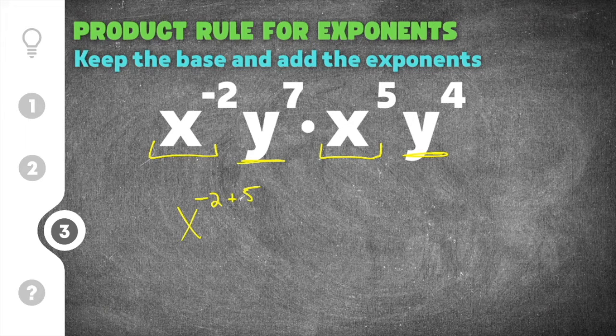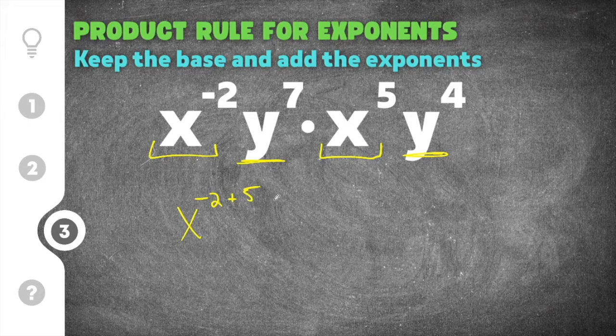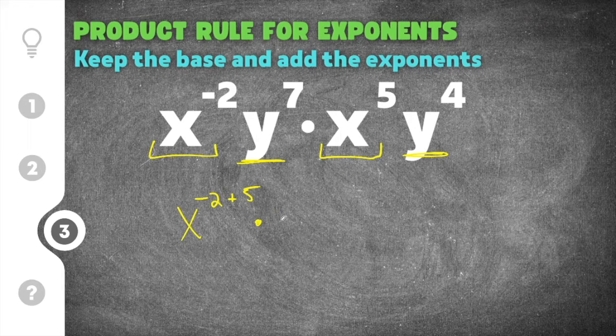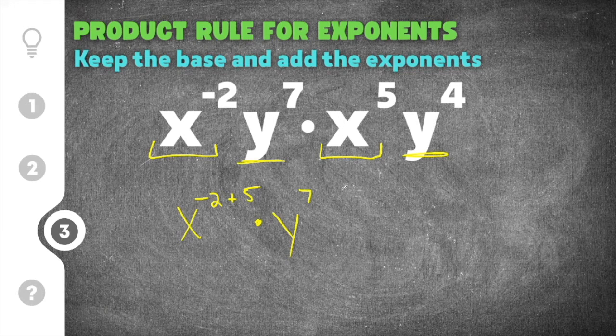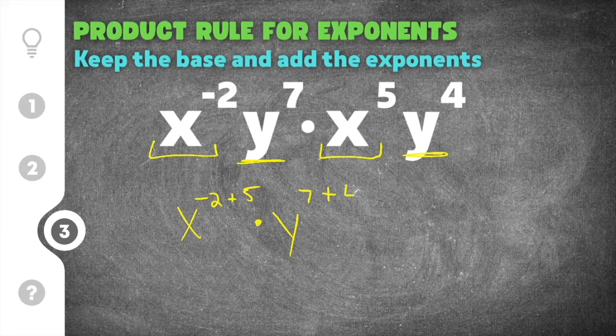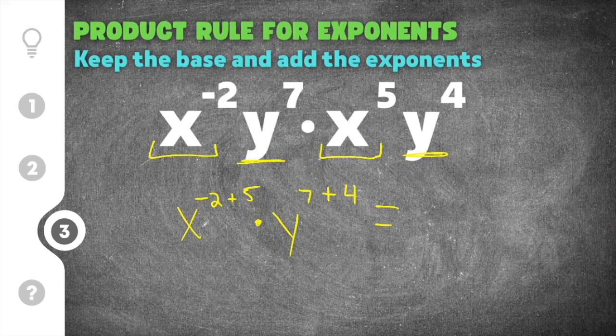So we're going to add those together because we are multiplying. That's going to be multiplied times our second base which is y, and the first exponent is seven and that gets added to the second exponent which is four. Then you simplify.